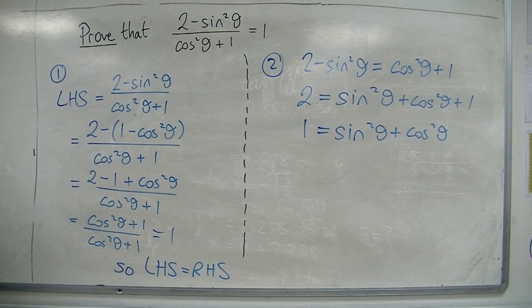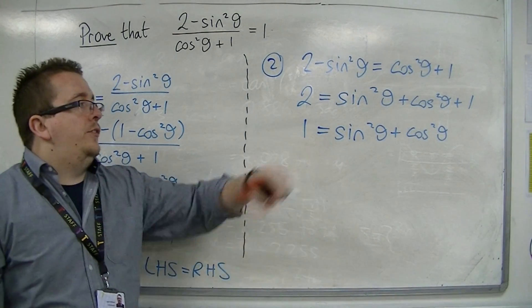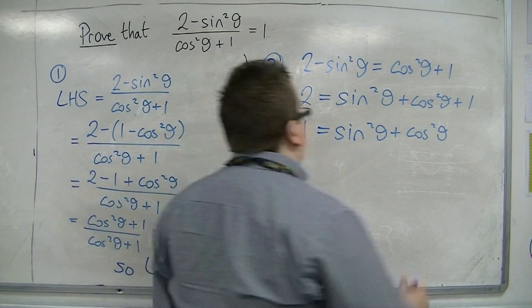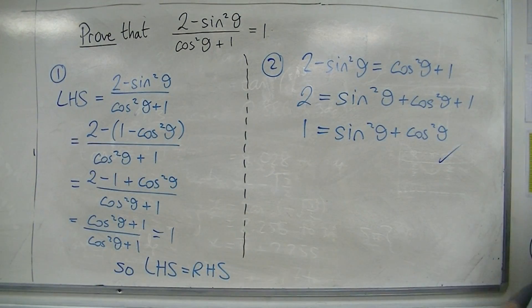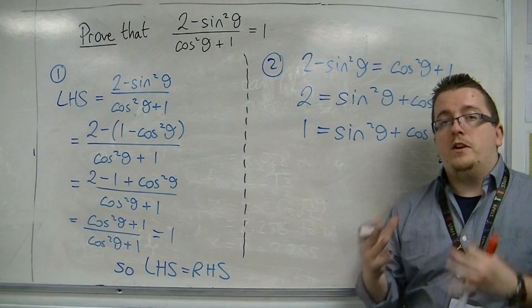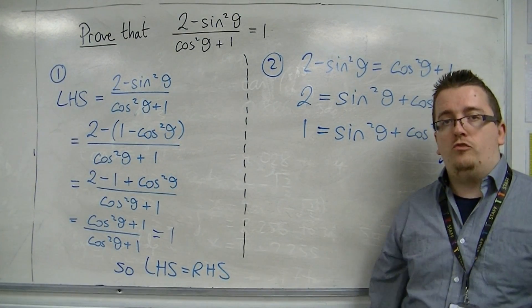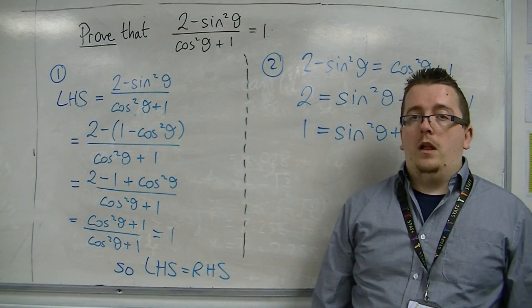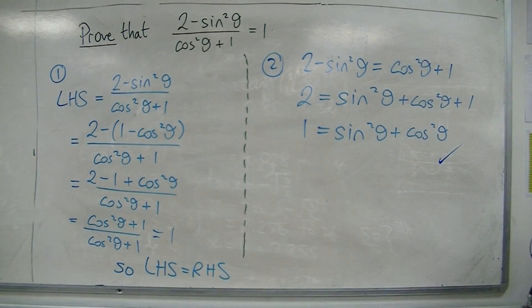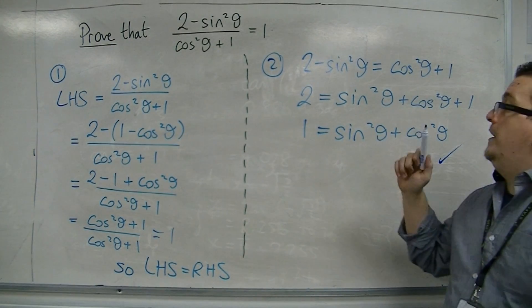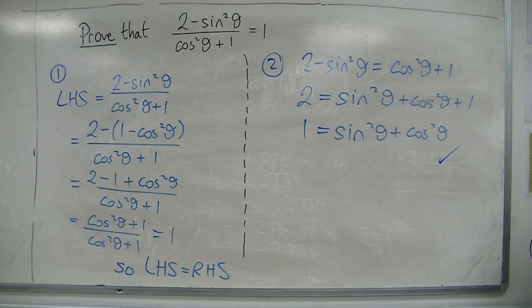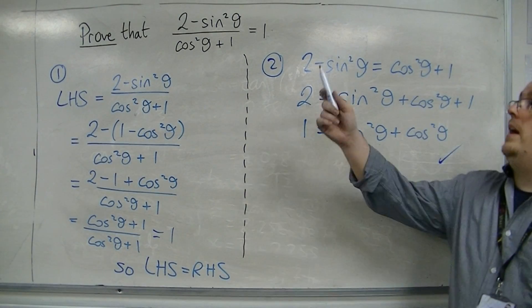So, what we've got down to is that 1 is equal to sin squared plus cos squared, which is a trig identity. Because I've got down to a trig identity which we know to be true, the original must be true as well. It's just a rearrangement of this original trig identity. So, this proves that that must be true.